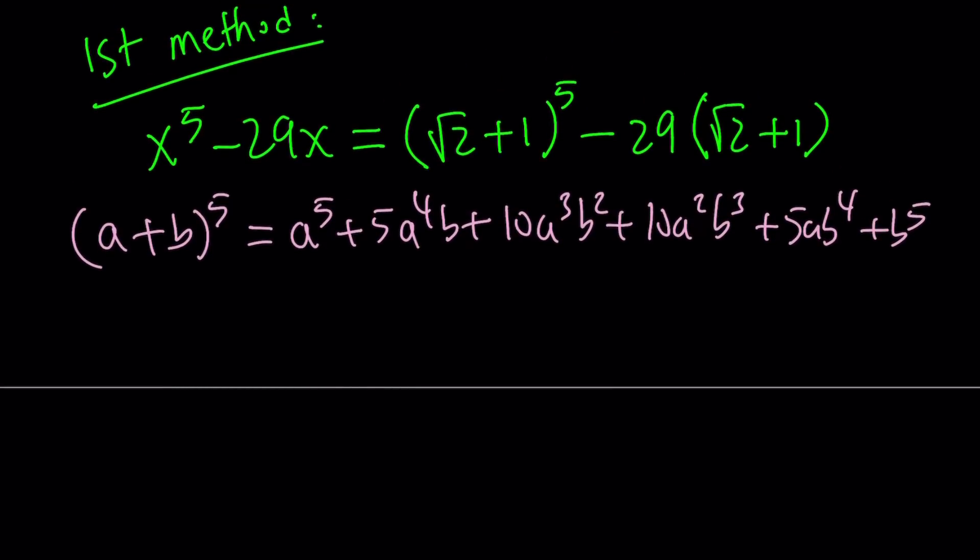So let's go ahead and use it with square root of 2 plus 1. So (√2 + 1)^5 is going to equal the following: (√2)^5 + 5(√2)^4.